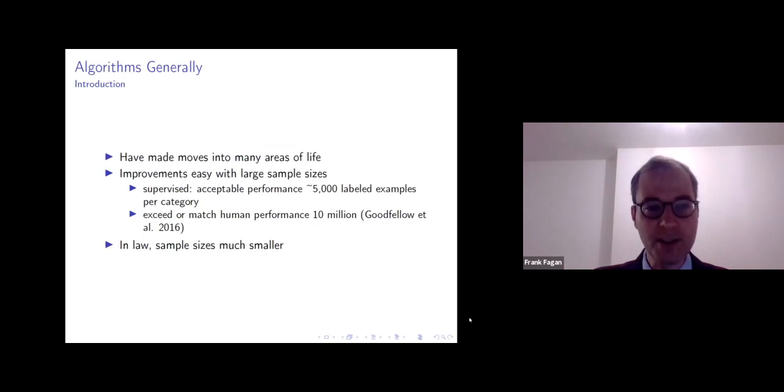I'll start with an observation that algorithms have generally been successful over the past years. They've made many moves into many areas of life, and it's easy to see that these improvements were made with relatively large sample sizes. A leading textbook in machine learning, this Goodfellow citation here, sort of defines what large sample sizes mean for good machine learning.